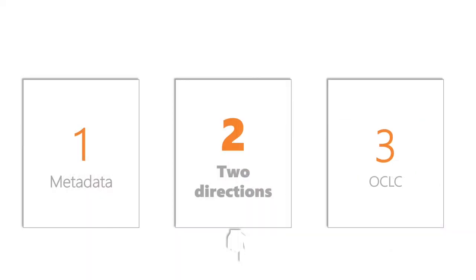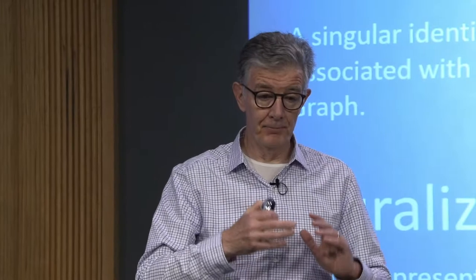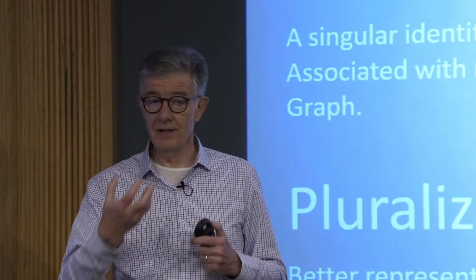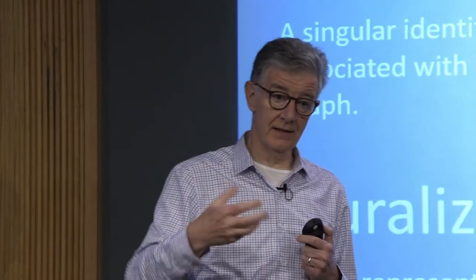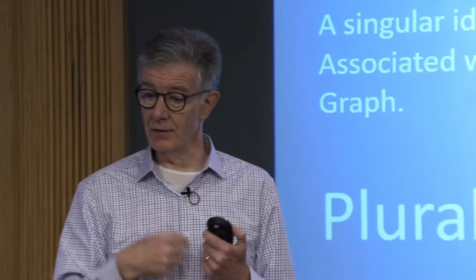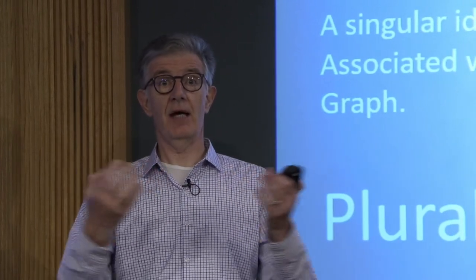In this context, I want to highlight two directions that are quite important at the moment. The first is what we call entification. We in the library community are used to thinking about resources — books, journals, digital content — as the entity of interest, and we give those identifiers. We're used to ISBNs, OCLC numbers, and DOIs. But increasingly what we want to do is give an identity to all the resources of interest to us — organizations, places — and be able to refer to those in applications and do sensible things with them.